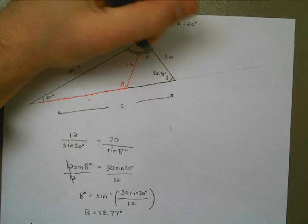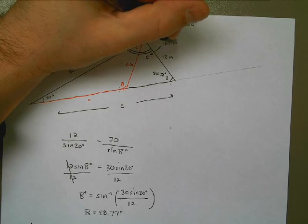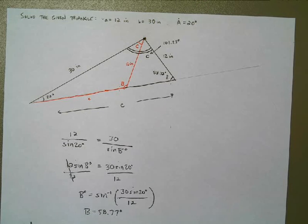Which means that angle C must be 180 minus that 78.77, which is 101.23 degrees. I just solved for the black angle C here.